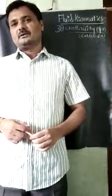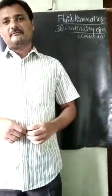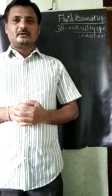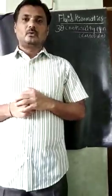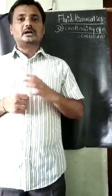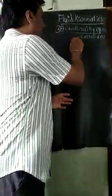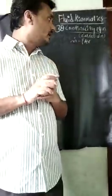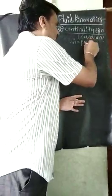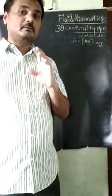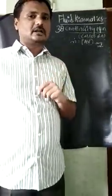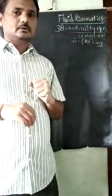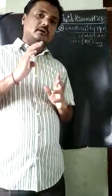Hello, my dear students, and welcome back to the study of fluid kinematics. In the previous video lectures, we derived the one-dimensional continuity equation in terms of mass flow rate: ṁ = ρAV, where ρ is the density of the fluid, A is the flow area perpendicular to the direction of flow, and V is the average velocity. This is also called the conservation of mass. Now, in continuation of that, we will derive the three-dimensional continuity equation in Cartesian coordinates.